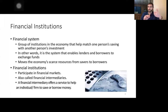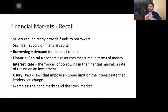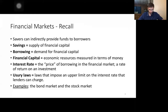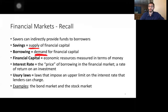We're going to talk about the bond market, stock market, and banks. As a quick review, we apply the demand and supply model to the market for loanable funds. The supply in this market comes from savers — people saving for future consumption — and the demand curve comes from borrowers, the people trying to get loans. The quantity being transacted between borrowers and savers is financial capital.